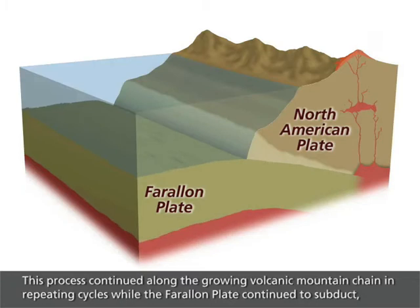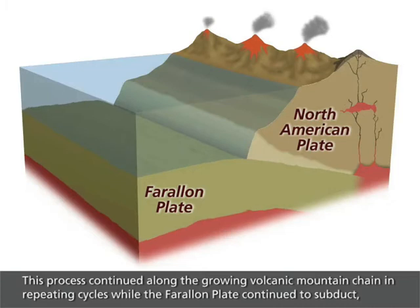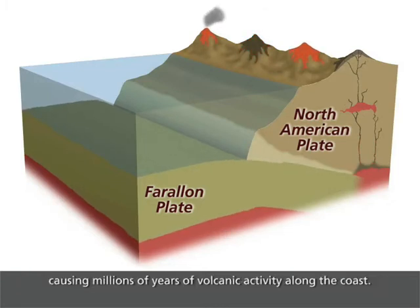This process continued along the growing volcanic mountain chain in repeating cycles, while the Farallon plate continued to subduct, causing millions of years of volcanic activity along the coast.